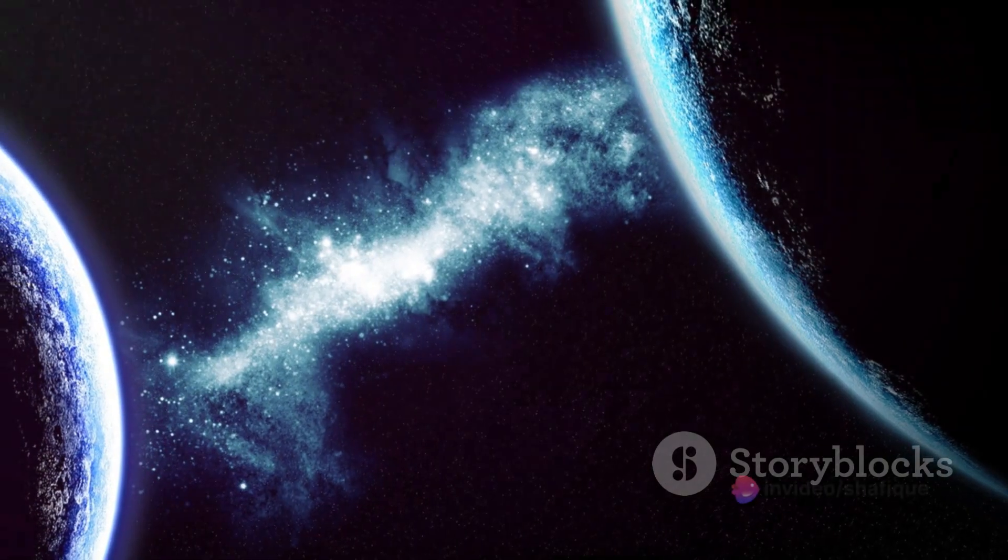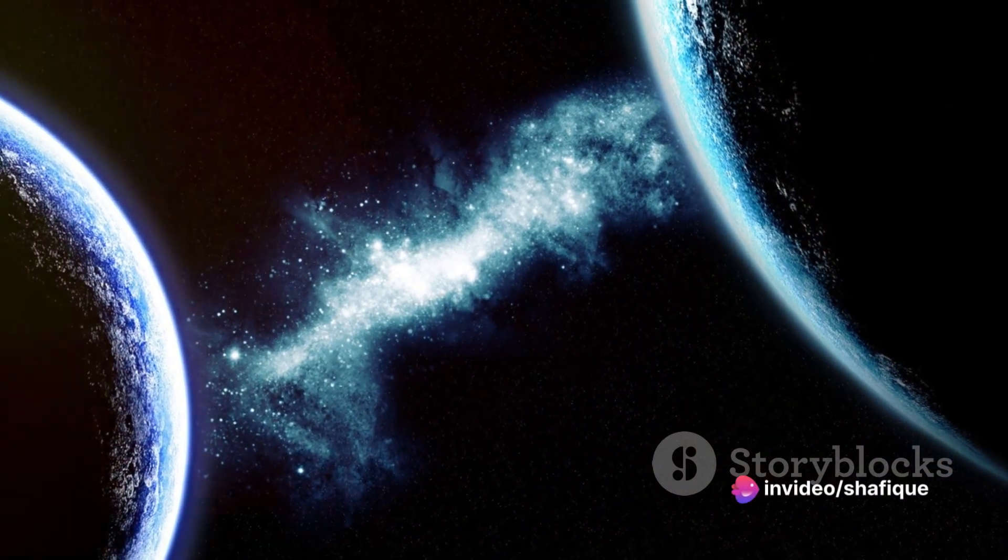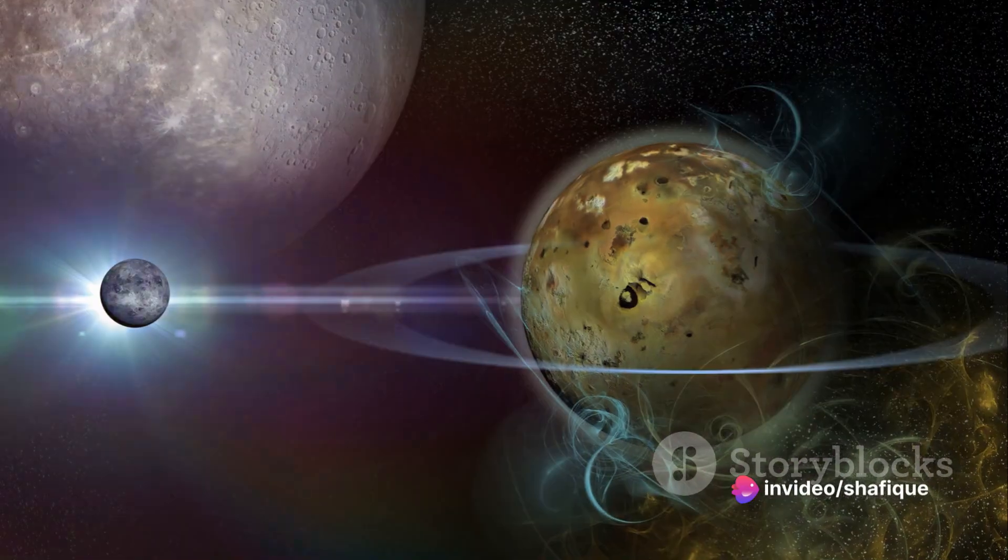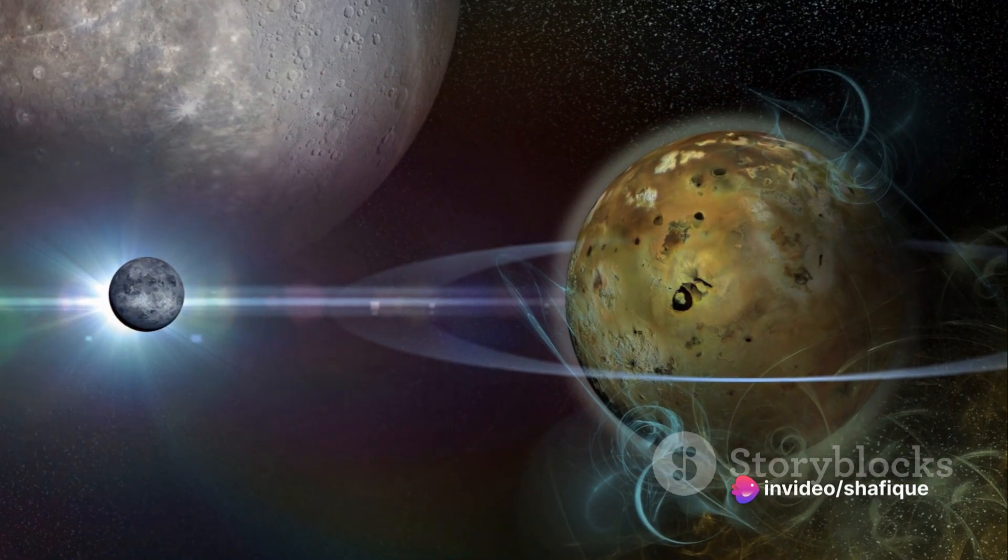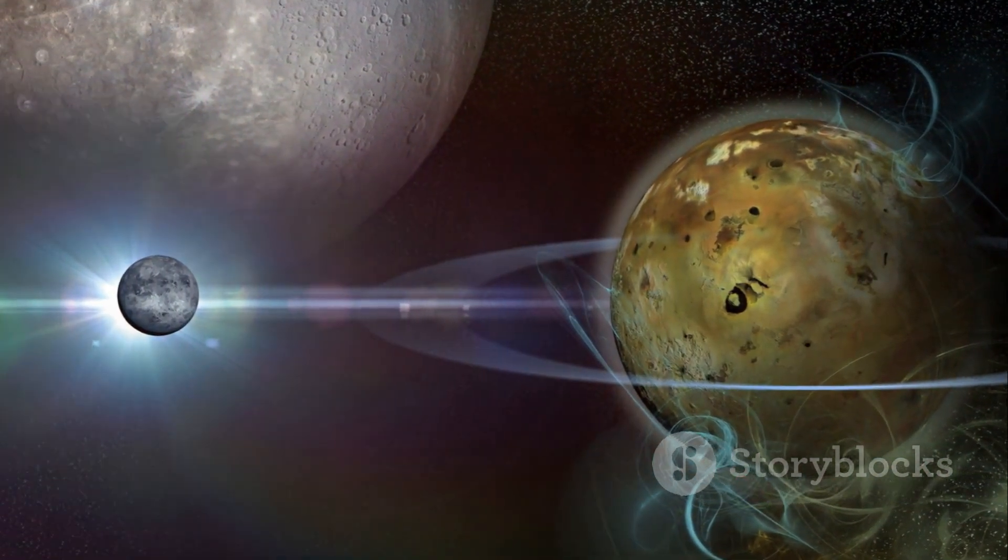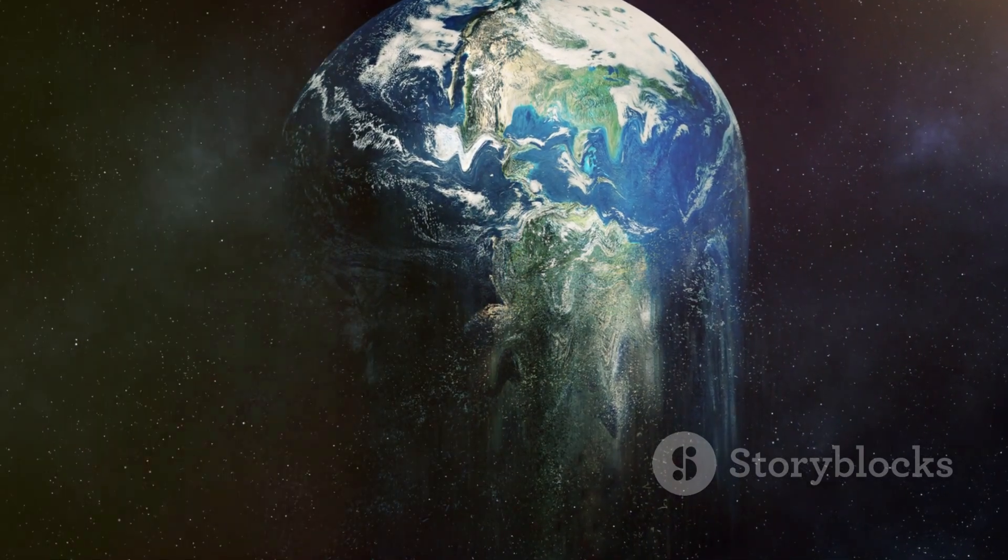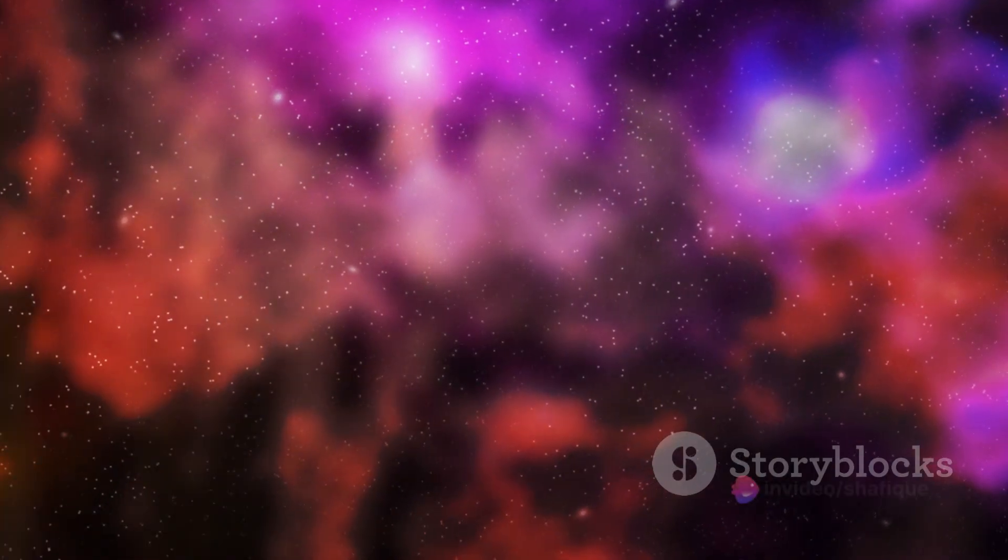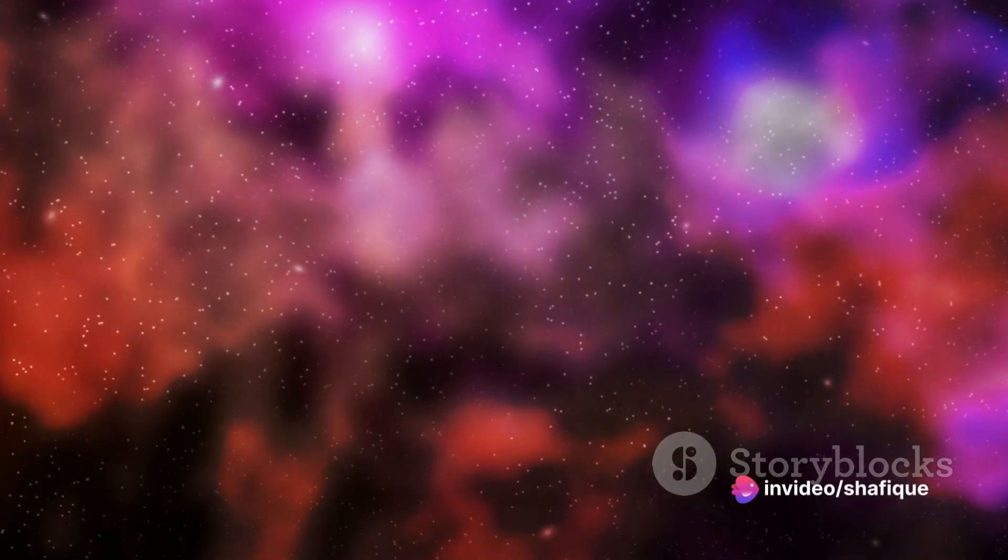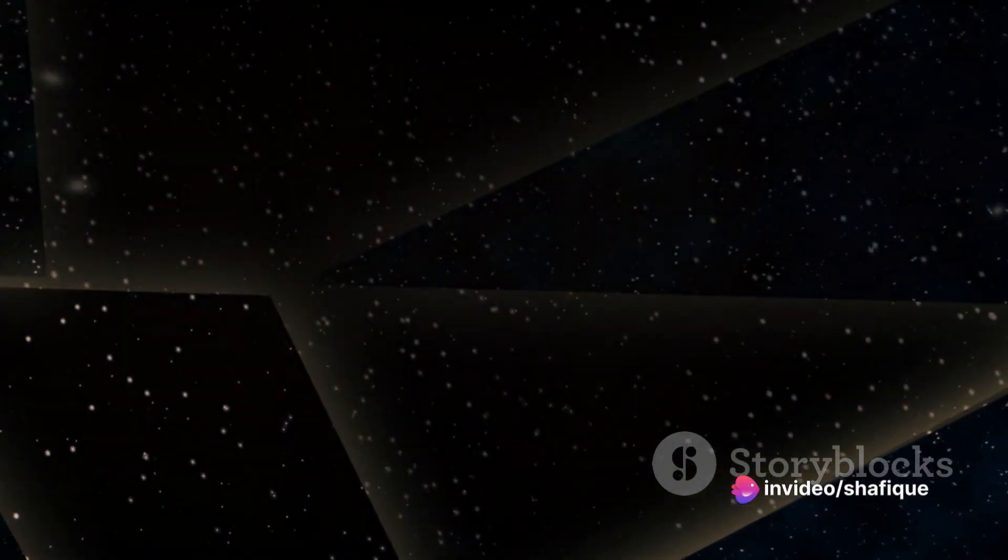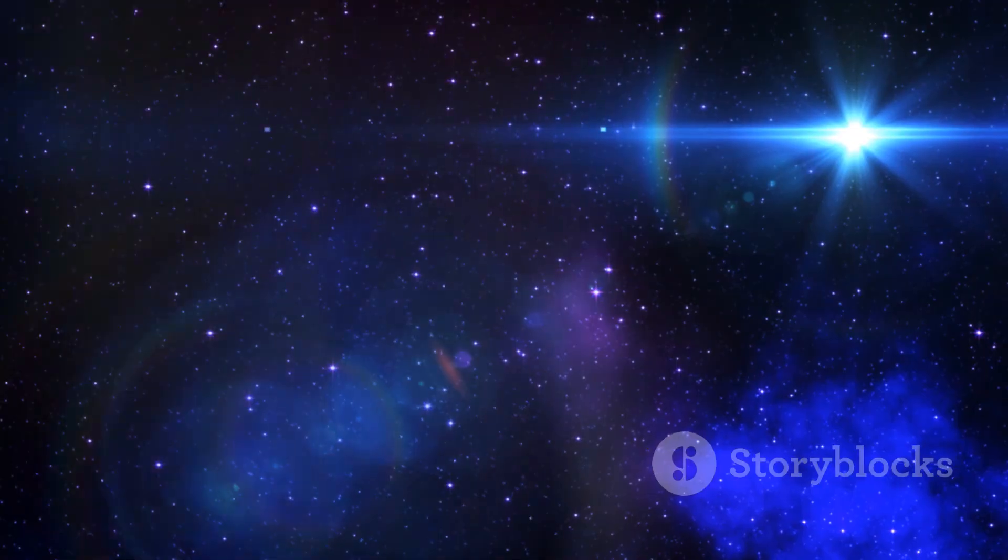Fast forward to 2019, another revelation changed our perception of the Milky Way yet again. Scientists discovered that our galaxy is not a flat spiral, as had been assumed for decades. Instead, it's warped and twisted, much like a vinyl record left out in the sun. This unexpected twist is thought to be caused by the gravitational pull of the Milky Way's inner disk of stars.